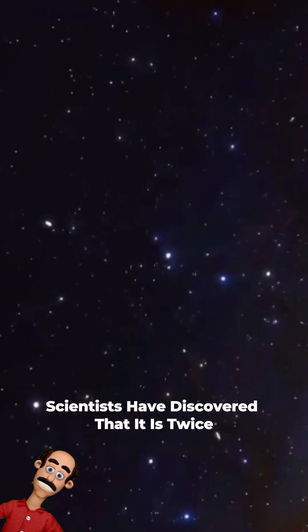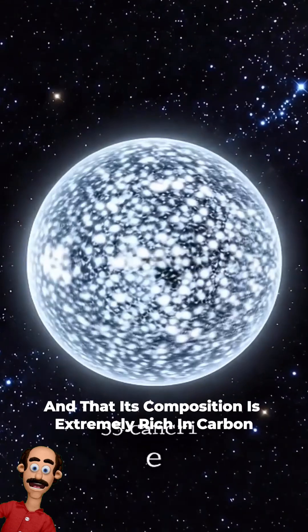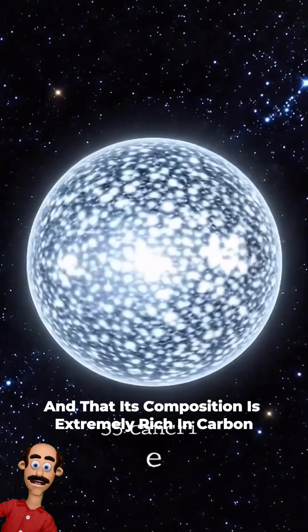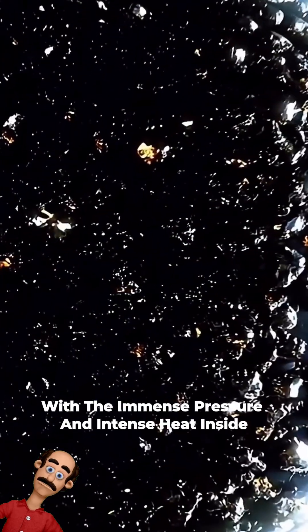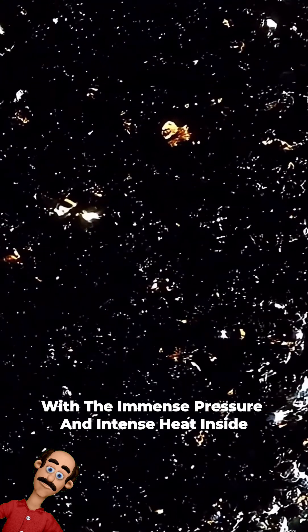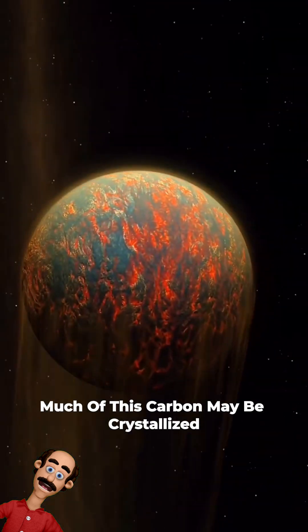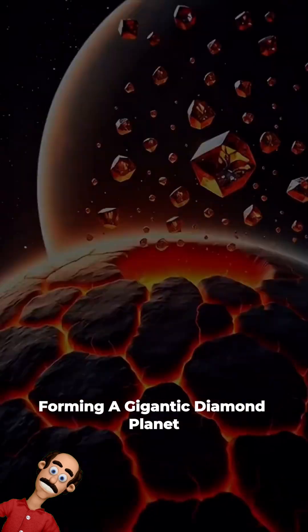Scientists have discovered that it is twice the size of our planet and that its composition is extremely rich in carbon. With the immense pressure and intense heat inside, much of this carbon may be crystallized, forming a gigantic diamond planet.